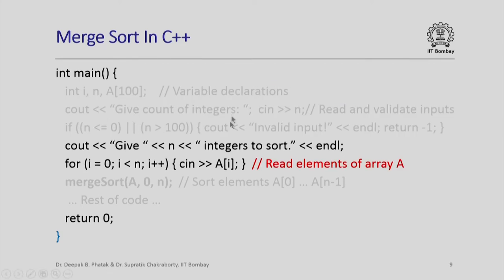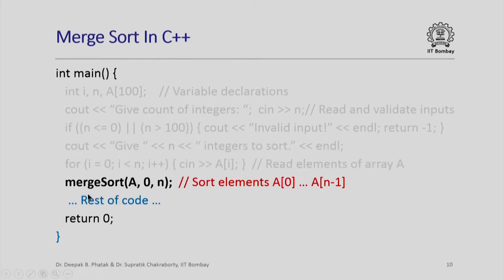After reading and validating the inputs, I ask the user to give all the integers to sort and read them in a simple for loop into array 'a'. The elements are stored in a[0] through a[n-1]. After reading the elements I call merge sort, passing the array 'a', a starting index of 0, and n as the total number of elements — meaning I want to sort a[0] through a[n-1]. Finally, the main function returns 0.